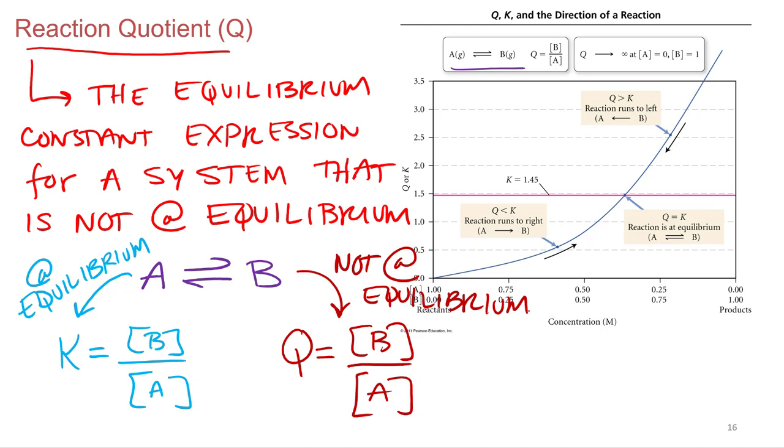So what was the definition of equilibrium again? Forward reaction equals, what about the forward reaction and reverse reaction? The rates. The rates of those reactions equal each other. The rate of the forward equals the rate of the reverse. So what does that mean if we're not at equilibrium? That means one of the rates is higher than the other. That means either the forward reaction rate's faster or the reverse reaction rate's faster.